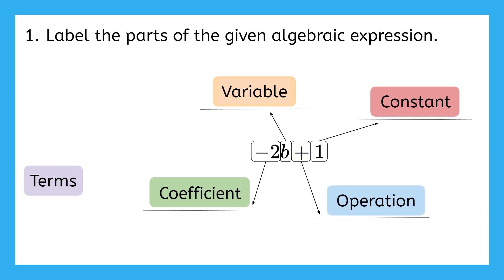We are left with the word terms, and there's not space to label the terms on the expression, but how many terms does this expression have and what are they? Well, remember, addition and subtraction are the operations that separate different terms. So here, our addition symbol breaks this expression into two terms, negative 2b and 1. Great work!